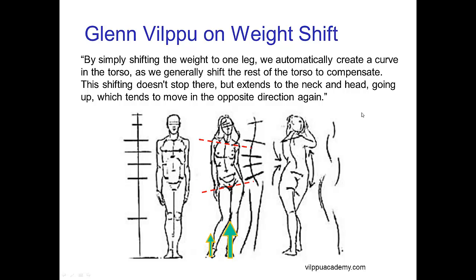Glen Vilpu, great teacher, puts this very nicely. He says, by simply shifting the weight to one leg, we automatically create a curve in the torso as we generally shift the rest of the torso to compensate. The shifting doesn't stop there, but extends to the neck and the head going up, which tends to move in the opposite direction again, so we get the very distinctive line of action in the entire pose resulting from this weight shift.